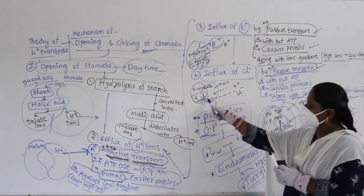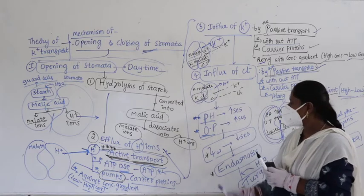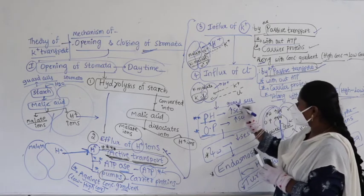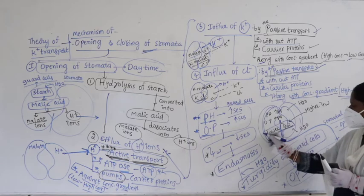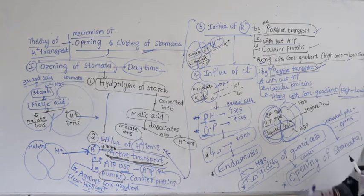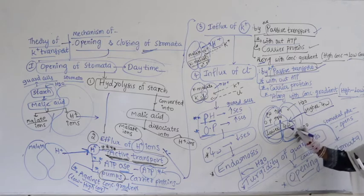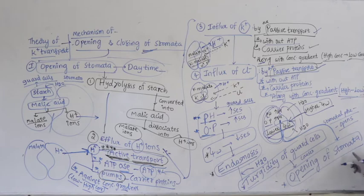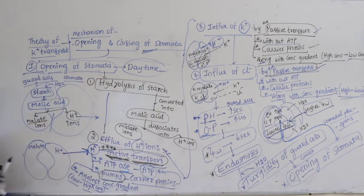When potassium comes inside it combines with malate to form potassium malate. Excess K⁺ is balanced by influx of Cl⁻ — also passive transport. KCl and potassium malate are formed. pH increases, osmotic pressure increases, water potential decreases inside, causing endosmosis. Water enters, causing turgidity of guard cells, and that causes opening of stomata.